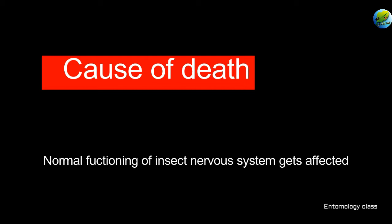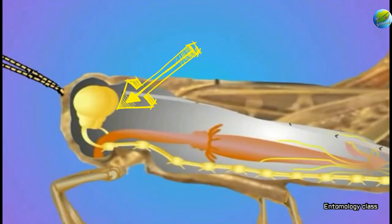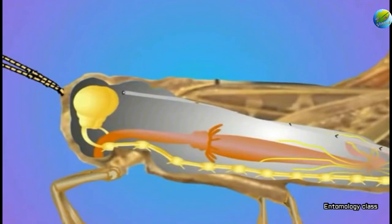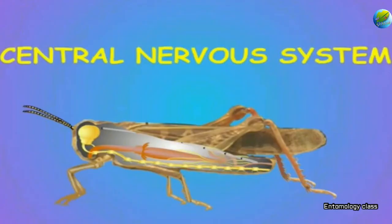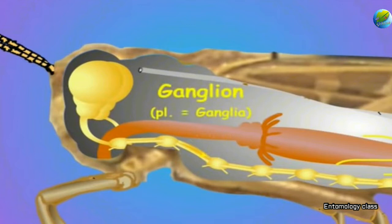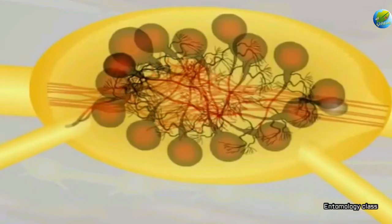It will be easier if we understand the normal functioning of the nervous system before getting into the mode of action of insecticides. The nervous system coordinates all the activities inside the organism. Like most other arthropods, insects have a relatively simple central nervous system with two important parts: the brain and ventral nerve cord. The brain is located dorsally on the head and is linked to the ventral nerve cord, which consists of paired segmental ganglia running along the ventral midline of the thorax and abdomen.